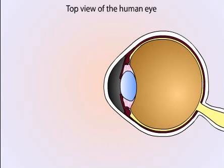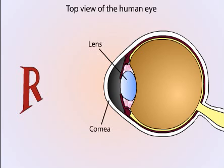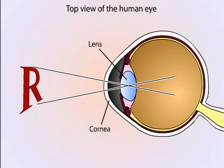The human eye has many of the features of a camera, starting with a lens to focus light. The cornea of the eye bends light rays and is primarily responsible for forming the image on the retina, the receptive surface inside the back of the eye.